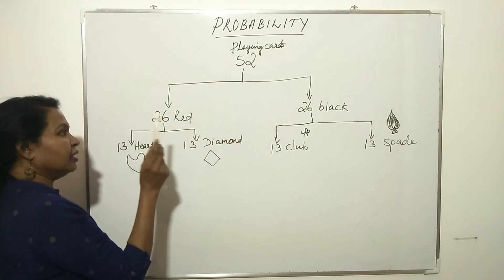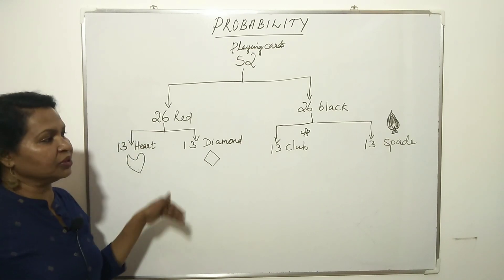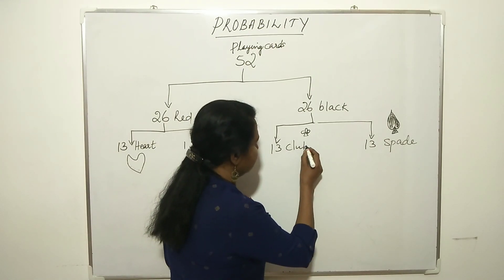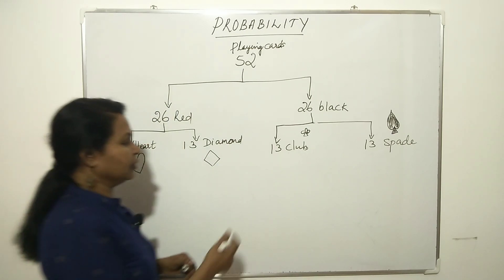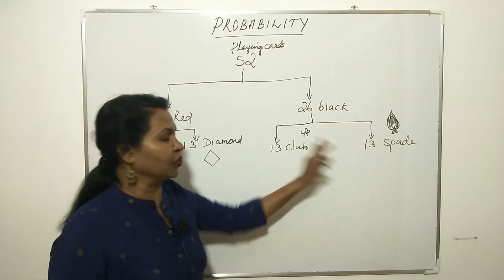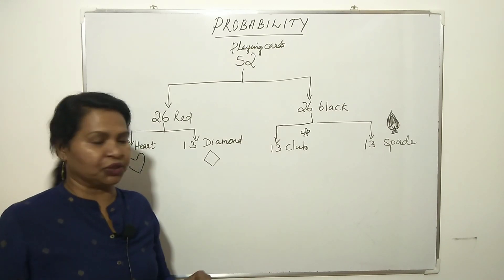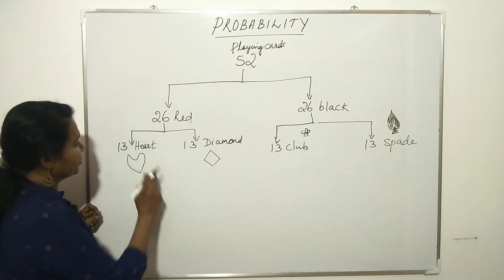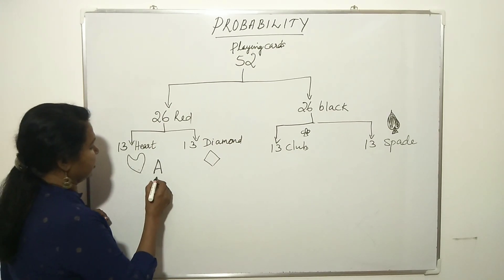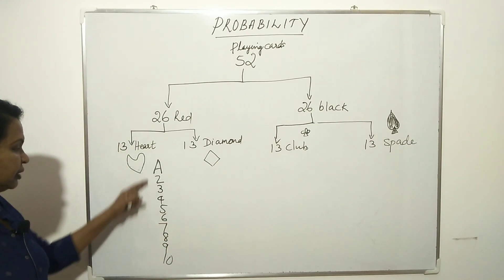So total 52 playing cards are divided into 2 groups of 26. The 26 red are divided into 13 heart and 13 diamond. The 26 black are divided into 13 club and 13 spade. That is 13 multiplied by 4 equals 52. Each set of 13 cards begins with Ace, then number cards: 2, 3, 4, 5, 6, 7, 8, 9, 10.